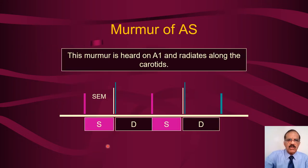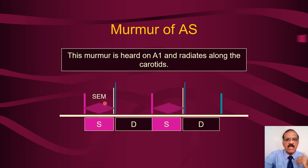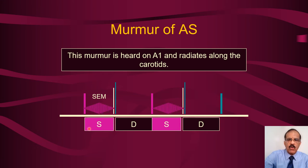In the graphic representation: this is the first sound, this is systole, and this is diastole. The murmur starts after the first sound, increases in intensity to reach its peak in the middle, then decreases in intensity — crescendo then decrescendo. This is the murmur of aortic stenosis.